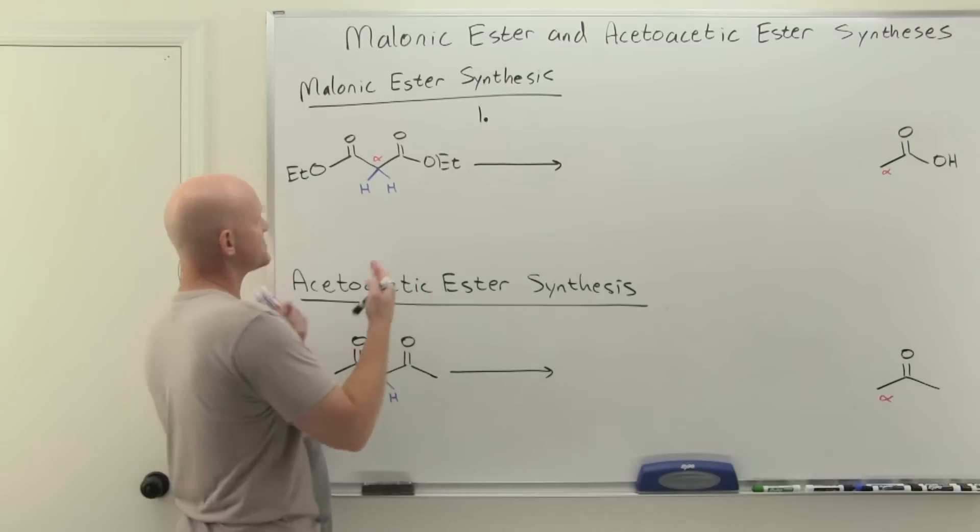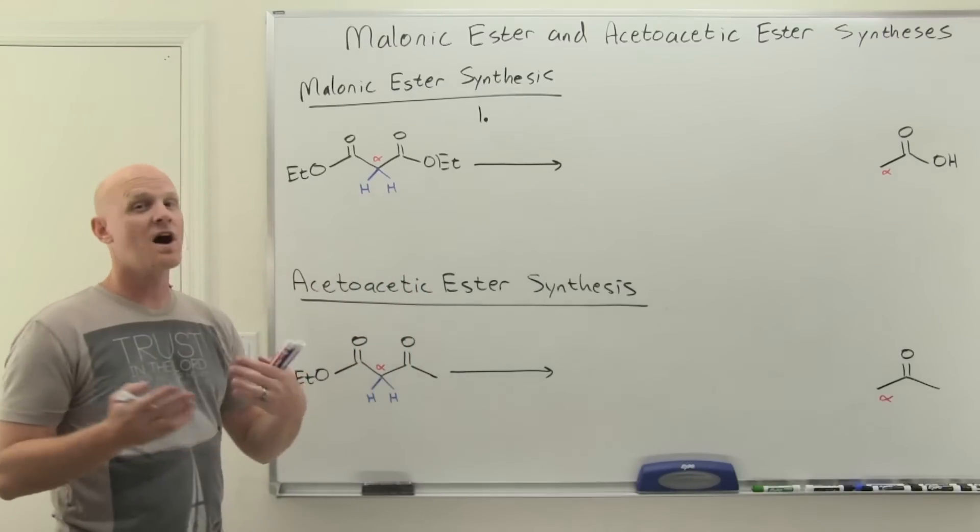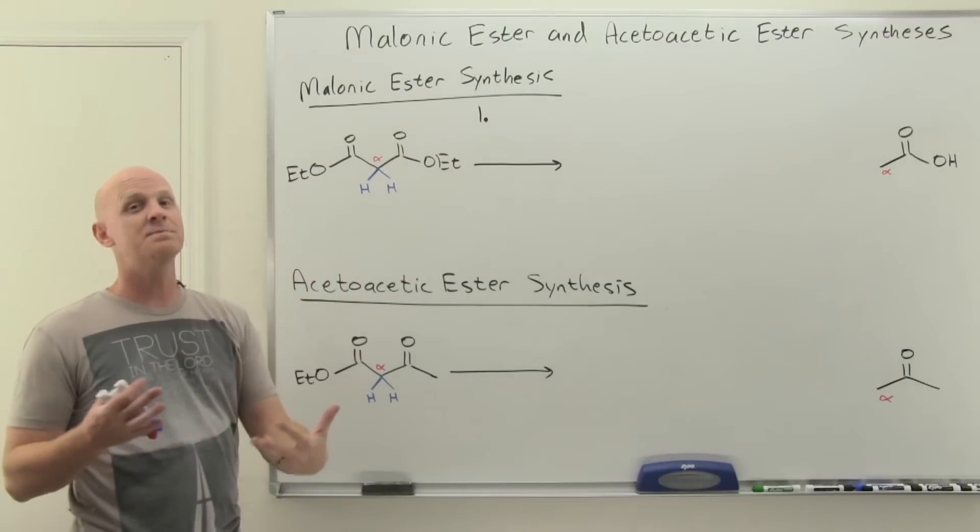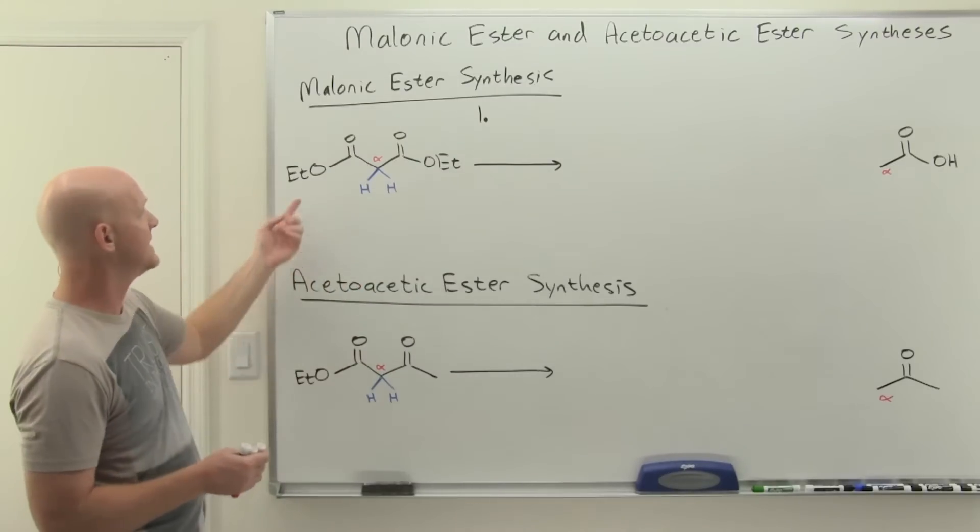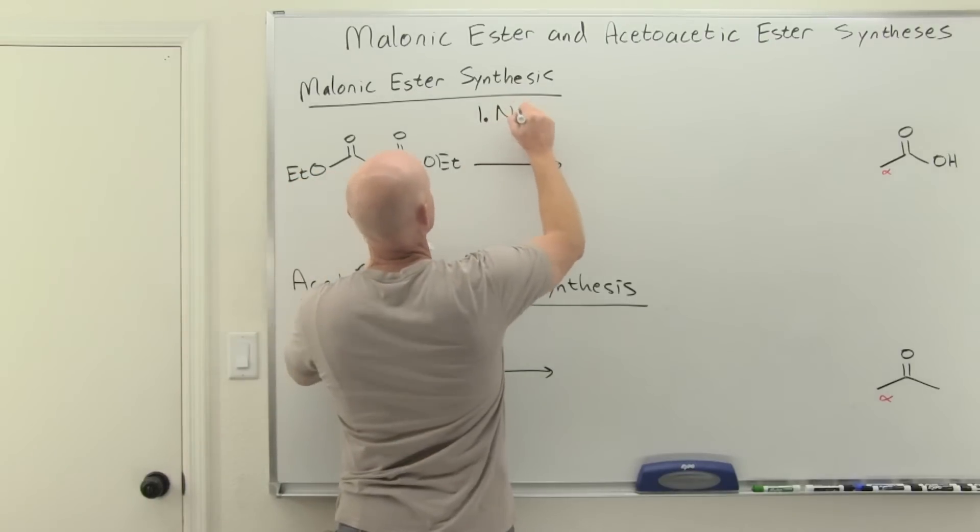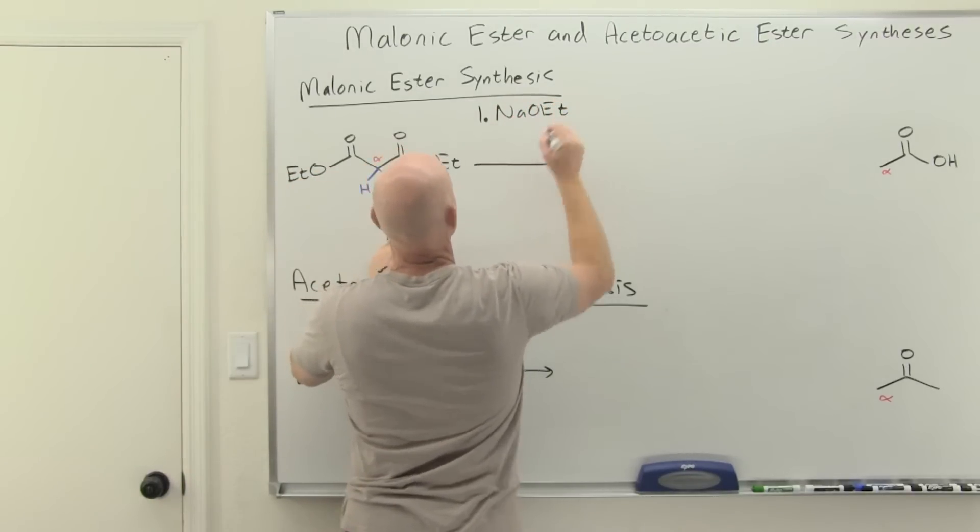The way this works, first, got to add a strong base to deprotonate here. And most commonly with esters, you add the leaving group of your ester as the base, just like we saw with the Claisen. And so in this case, we'll use like sodium or potassium ethoxide most commonly.